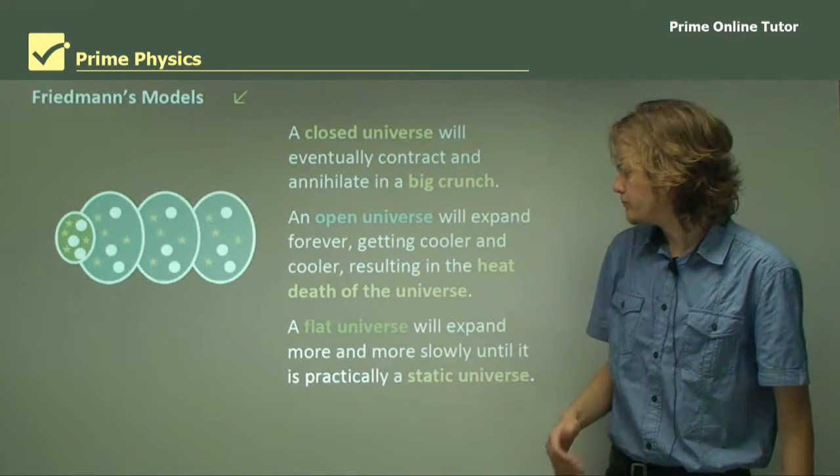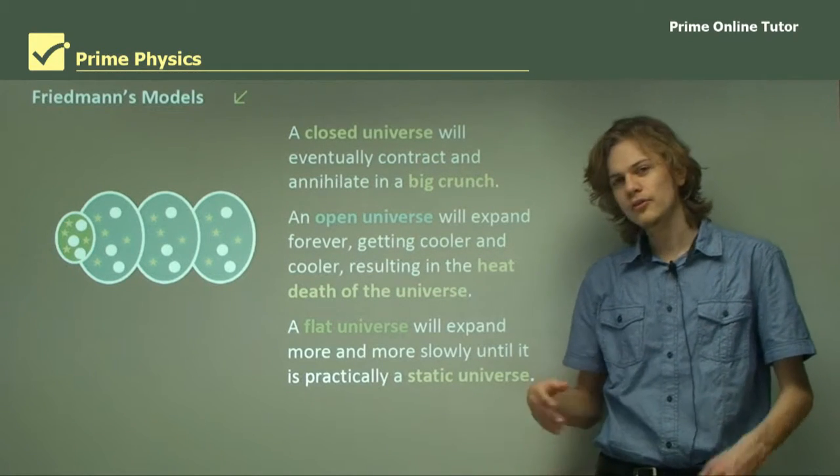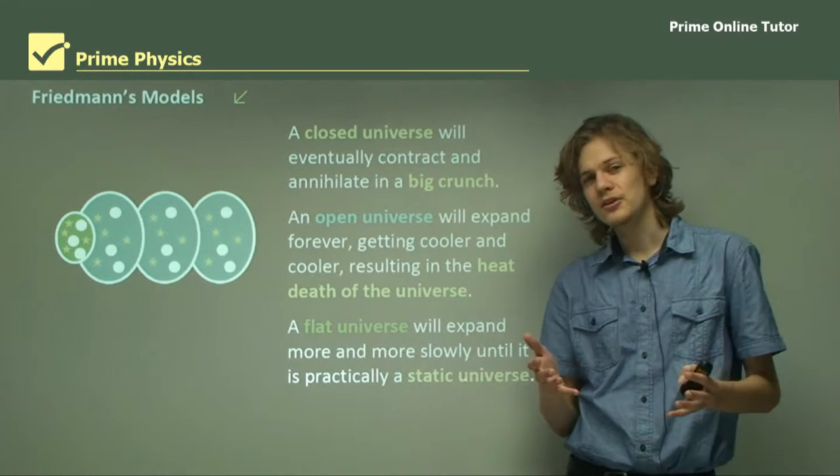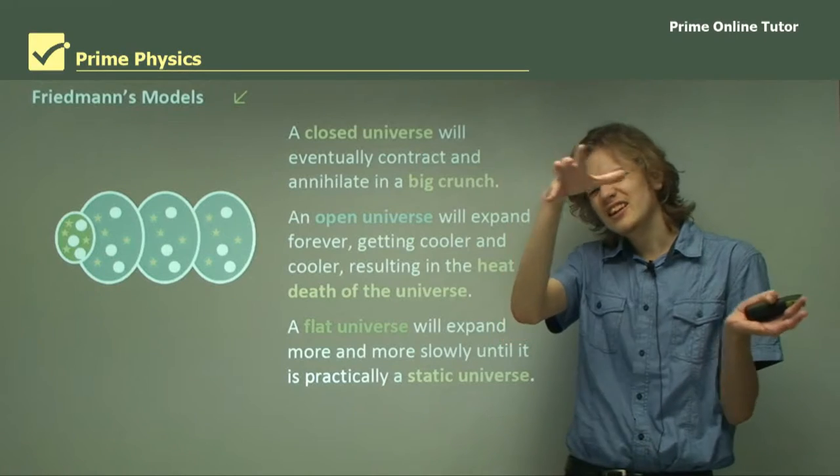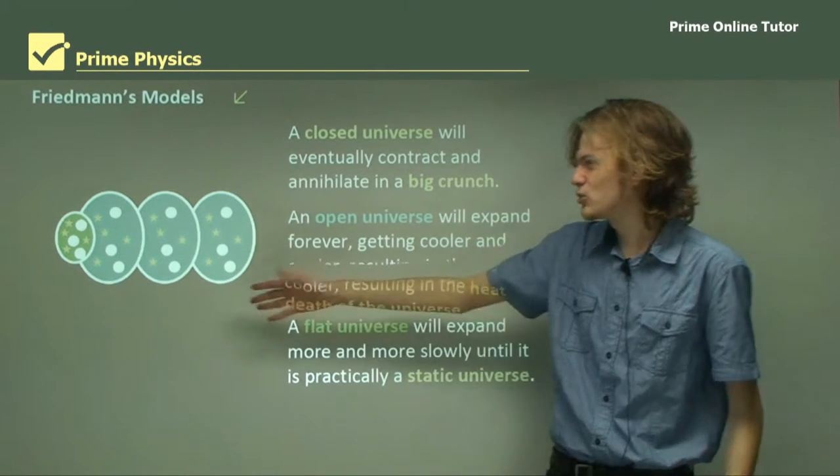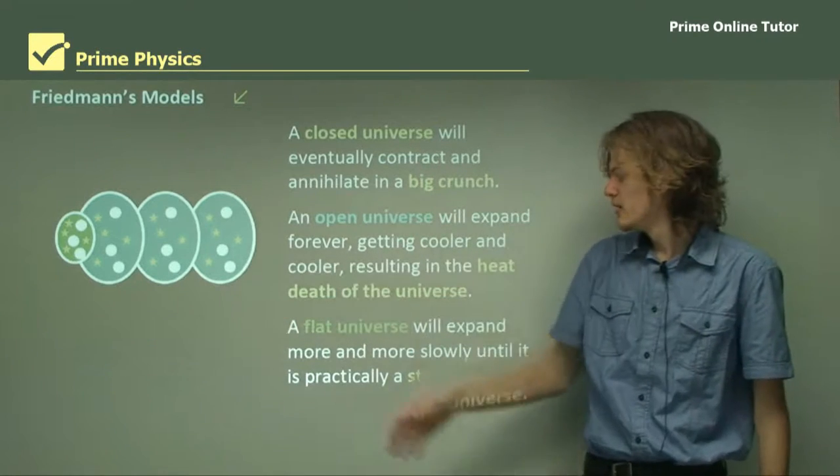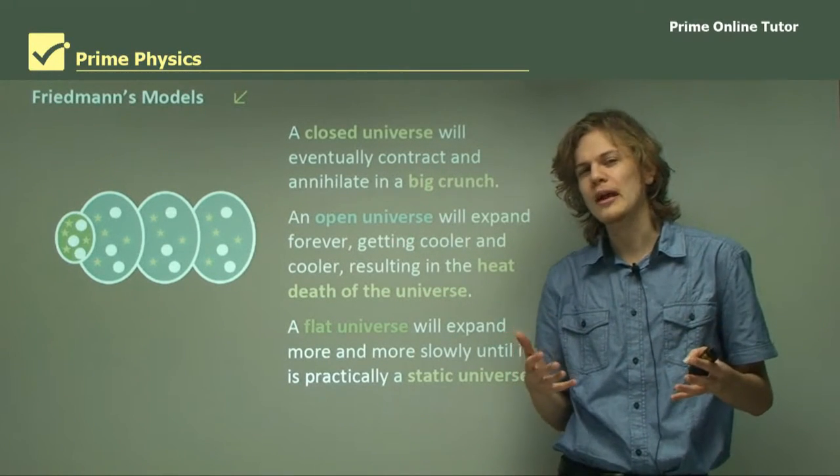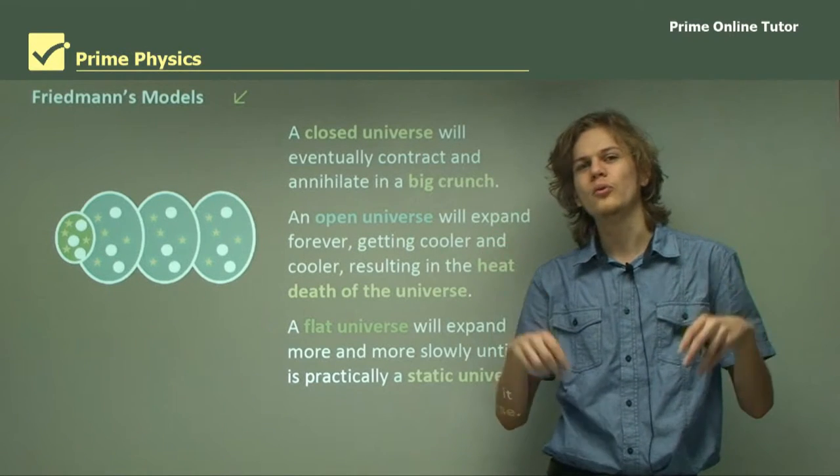And of course, the final theory is the flat universe. A flat universe will continue to expand forever, but it will expand at a decreasing rate. So it starts small, then it gets bigger, then it gets a little bit bigger, then it gets a tiny weeny bit bigger, and it just sort of ends up being the same size in the end. That's the flat universe, and that one's the closest that we have to a static universe, one that stays the same.